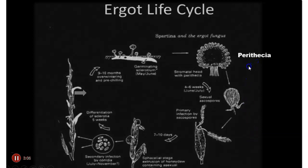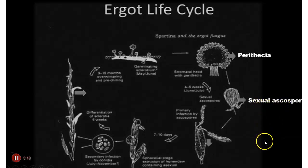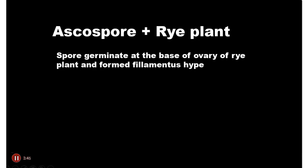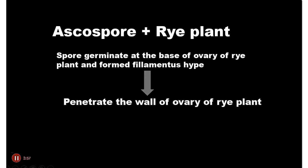This is the perithecia — the stomata head with perithecia. These are sexual ascospores, which cause the primary infection of the plant. Ascospores germinate at the base of the ovary of the rye plant and form filamentous hyphae, which penetrate the wall of the ovary.